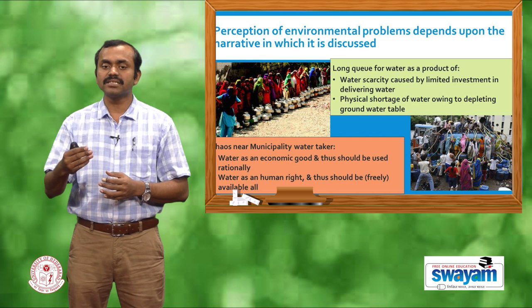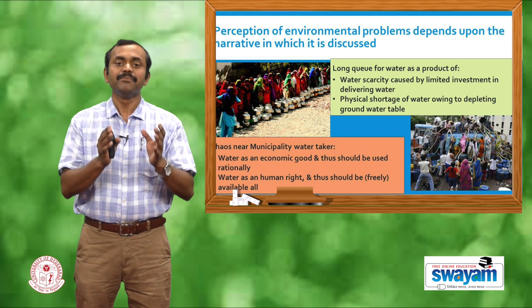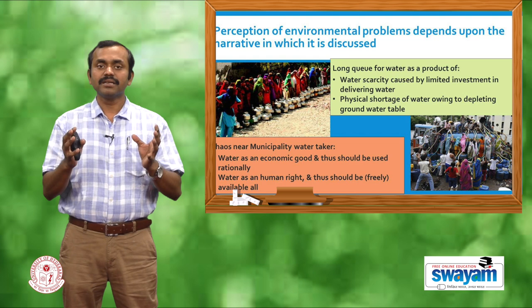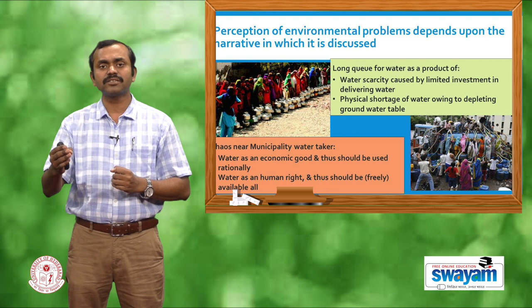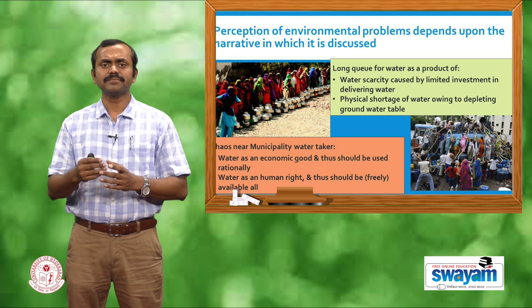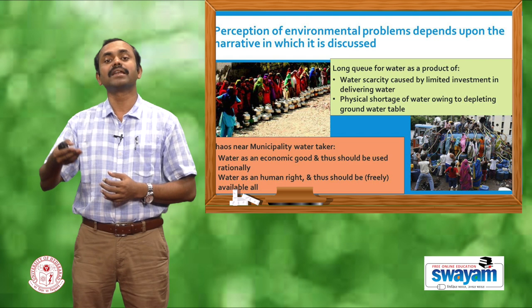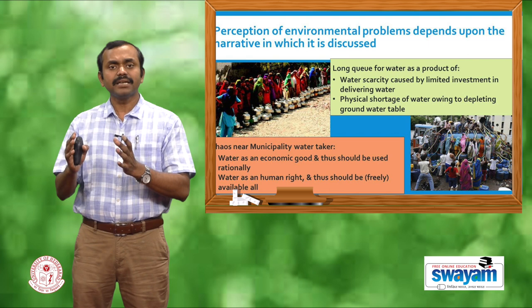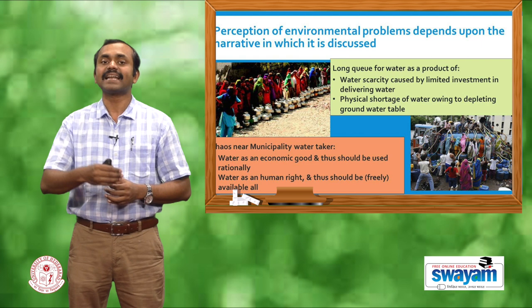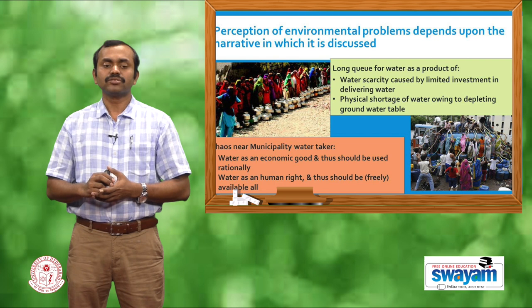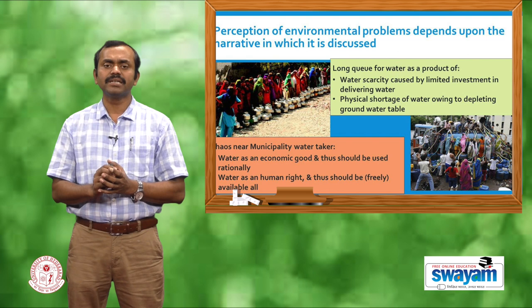The same picture or empirical reality can be expressed in different ways. Someone may conceptualize water scarcity as resulting from limited investment in the water sector — meaning there is enough water but it is not being extracted and delivered. Someone else may say there is physical water scarcity and not enough groundwater. Similarly, the chaos near the municipality tanker could point to water being an economic good and thus rationally used, or alternatively that water is a human right and should be freely available to all.